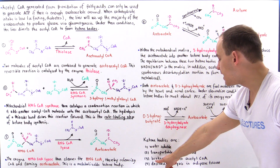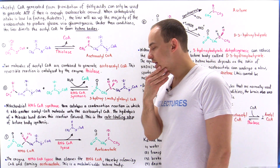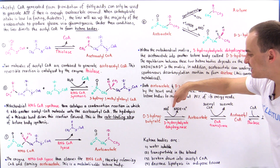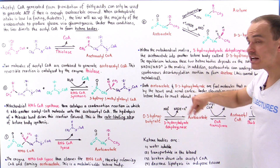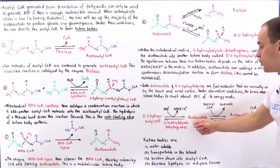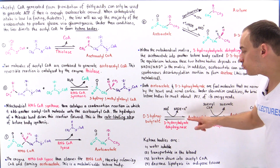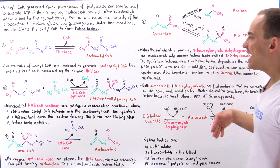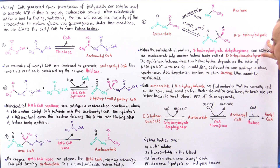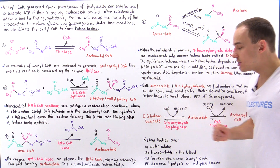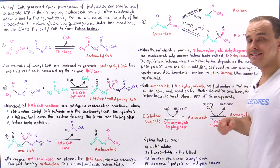Ketone bodies inside a target cell can be broken down into acetyl coenzyme A molecules. If D3-hydroxybutyrate is used, not only is acetyl coenzyme A ultimately generated, but NADH is also generated inside the target cell, which can be used by the electron transport chain to produce more ATP. If acetoacetate is used instead, NADH is not generated because that step is bypassed, and only the two acetyl coenzyme A molecules are produced. Therefore, D3-hydroxybutyrate allows the target cell to produce more ATP overall.